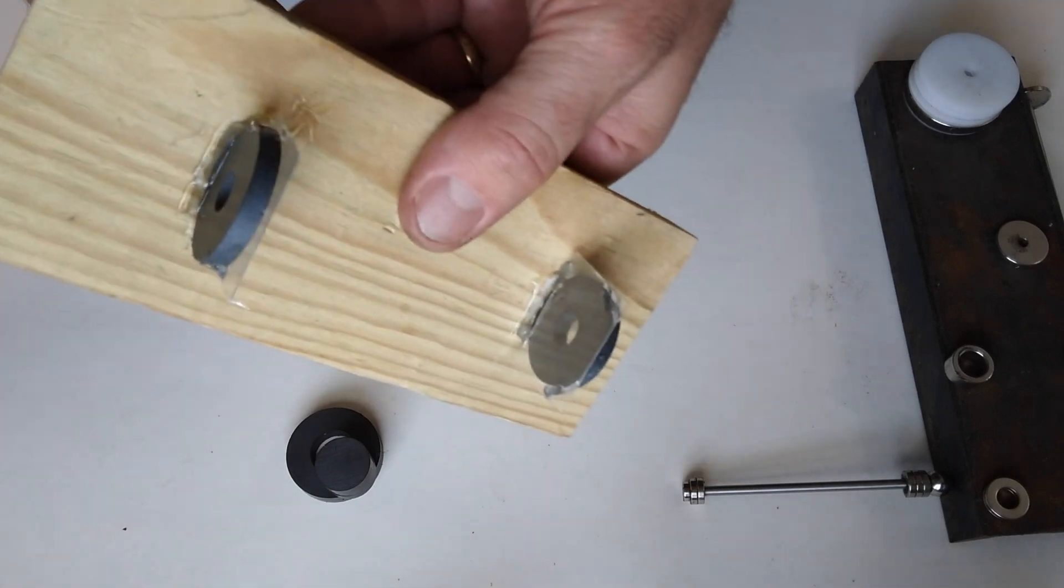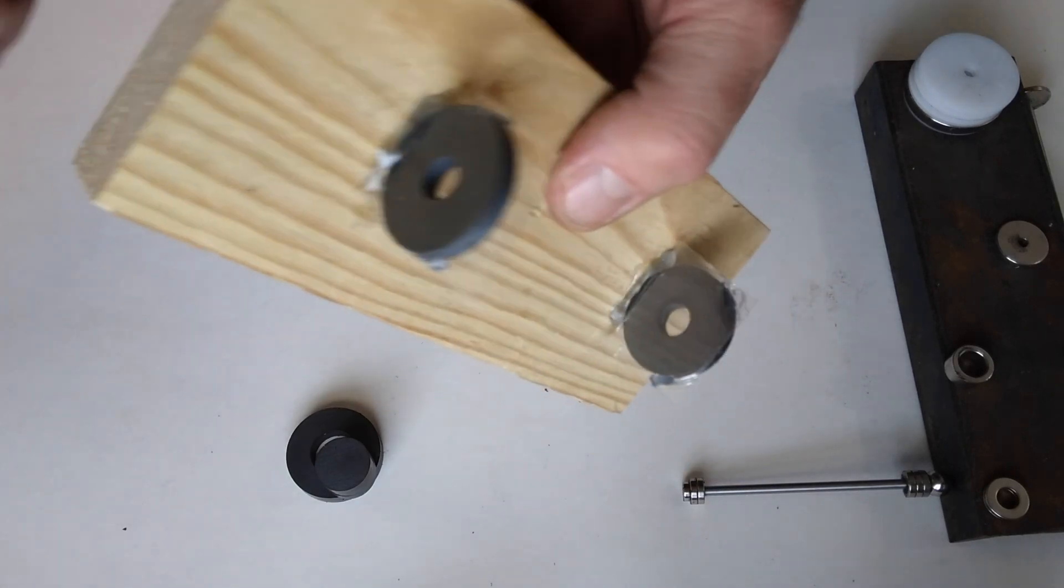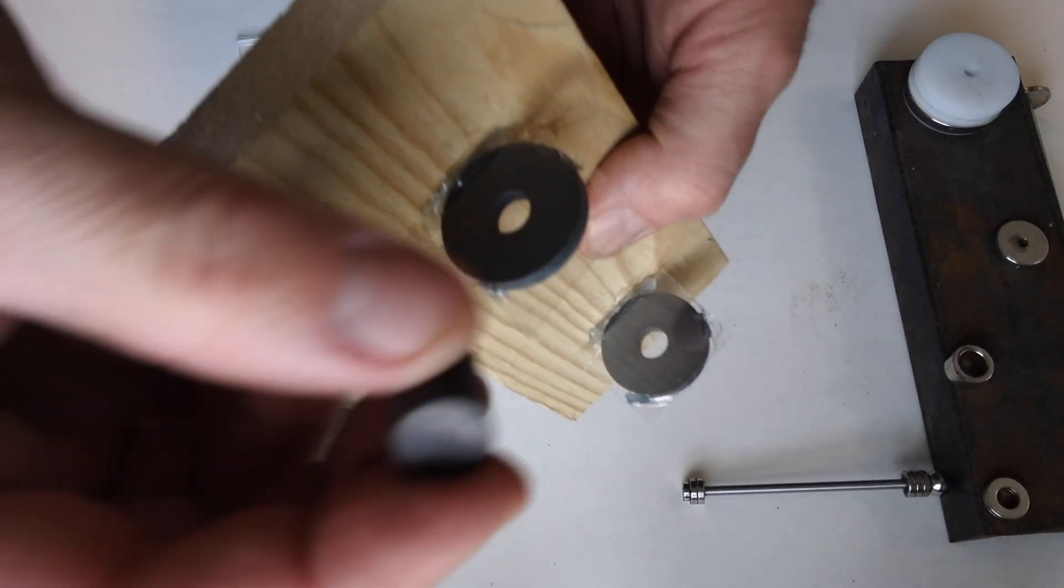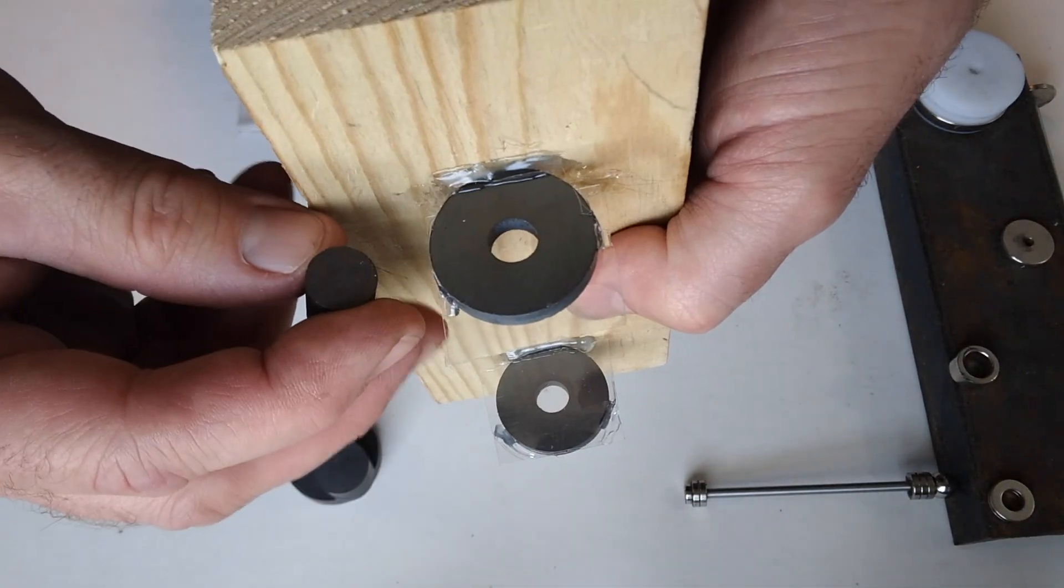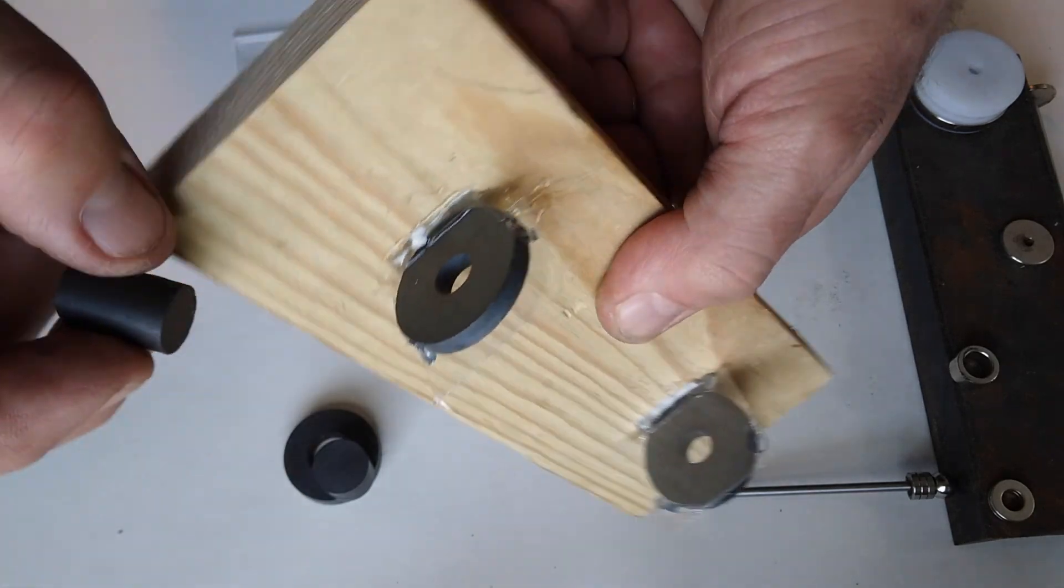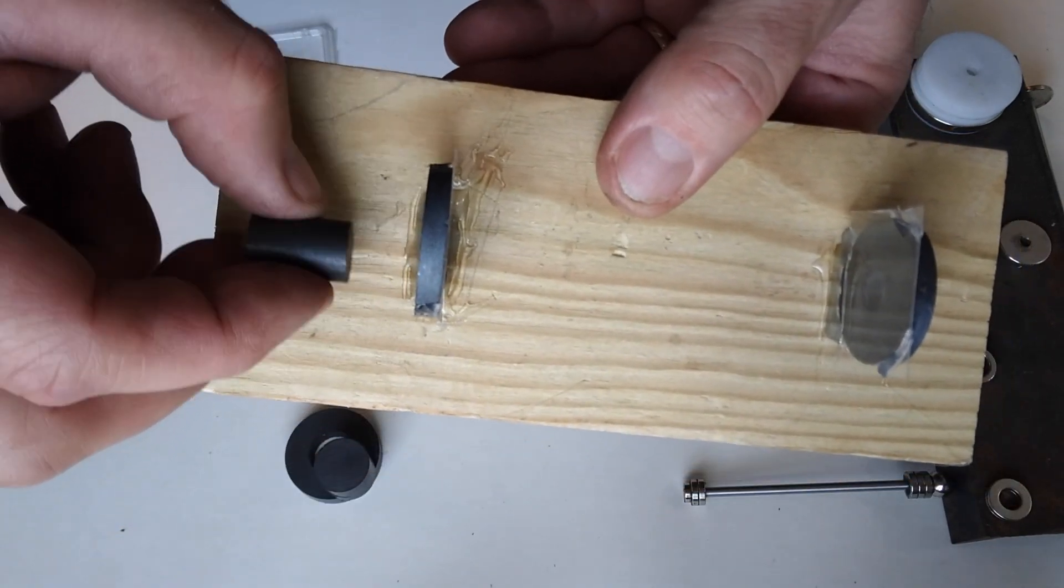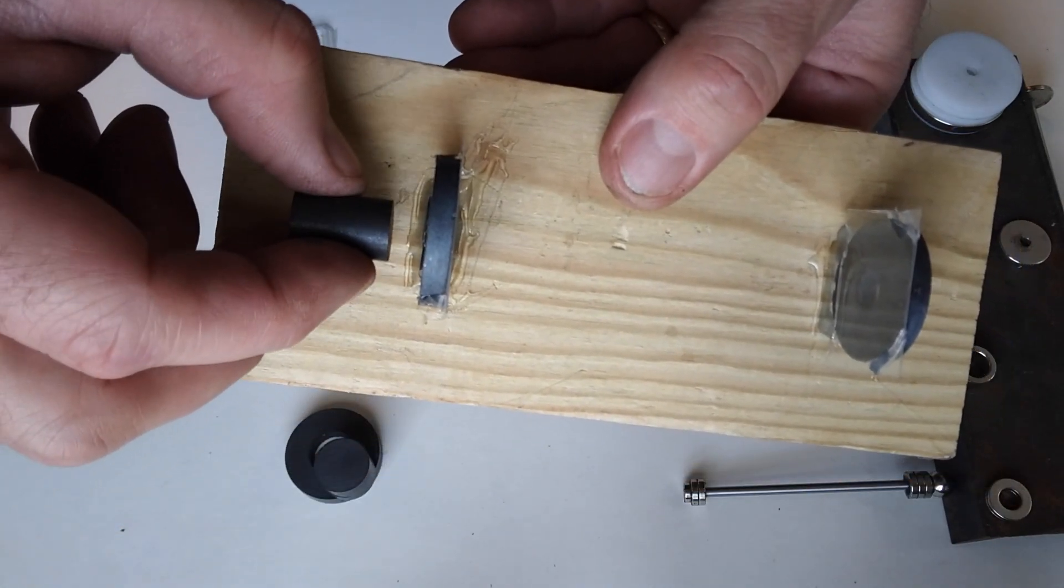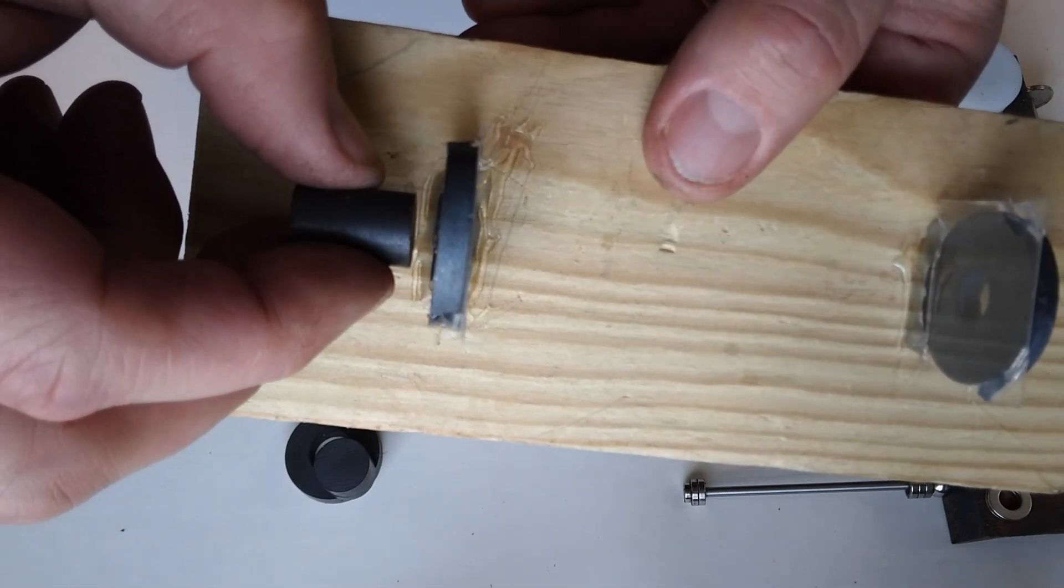I glued some other ceramic magnets to this board for further demonstration. And I have a ceramic cylinder magnet and the diameter is a little bit bigger than the inside diameter of that ring magnet. And this is in the repulsion position. So it repels, repels, and it gets to that point, that neutral point.